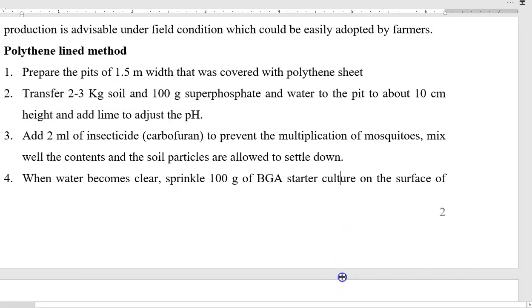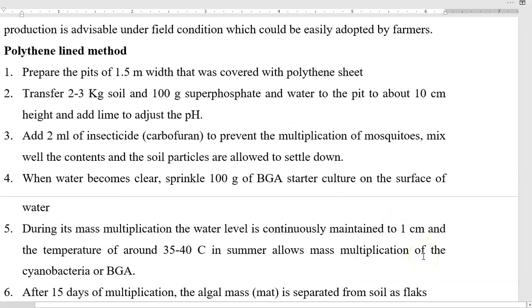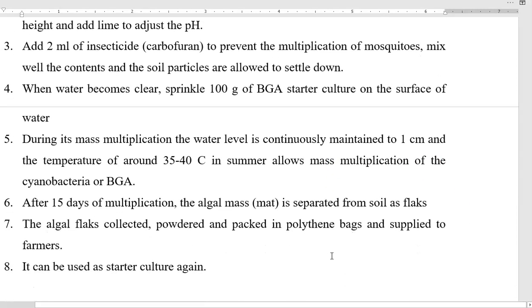When water becomes much clearer, sprinkle 100 g of blue-green algae starter culture on the surface of the water. This starter culture needs to be separately purchased — for example, from an agricultural university microbiology department. During mass multiplication, the water level needs to be continuously maintained at 1 cm and the temperature of that environment should be 35 to 40 degrees centigrade. It should be during summer time, which allows good multiplication of the cyanobacteria.